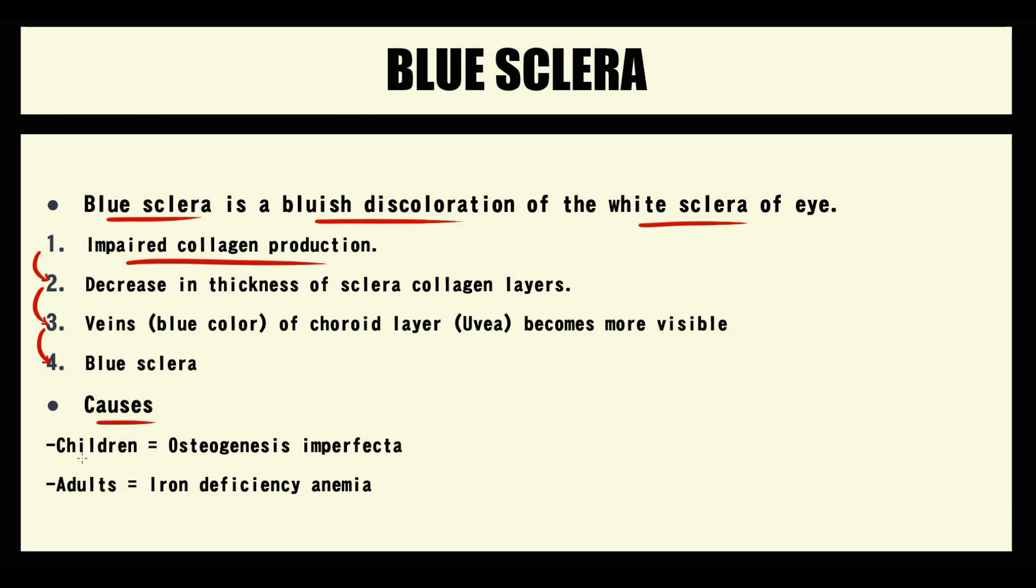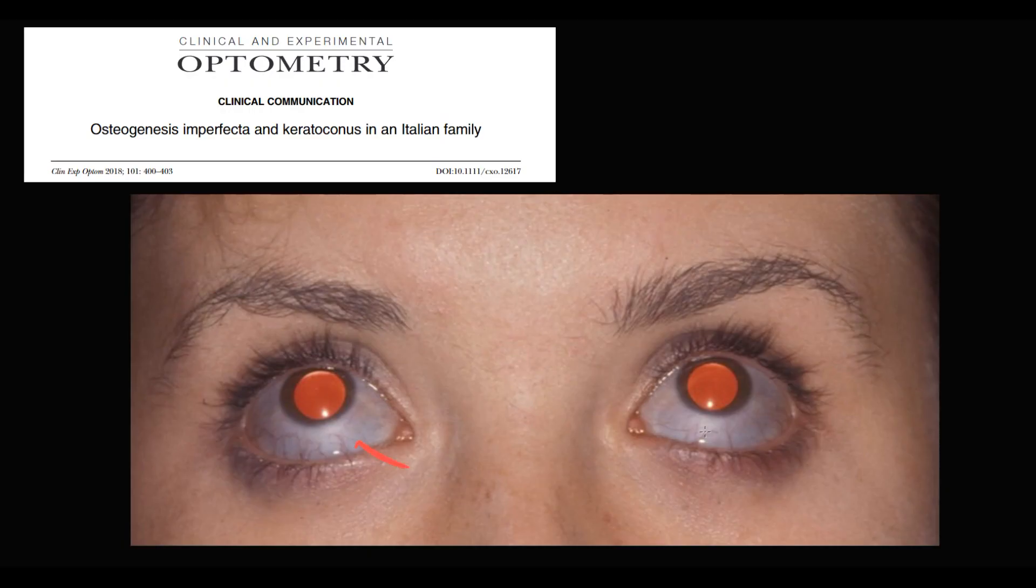The major cause of blue sclera in children is osteogenesis imperfecta. On this image we can see blue sclera of patients with osteogenesis imperfecta.